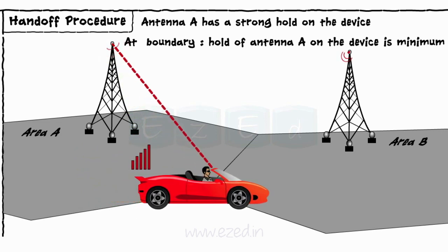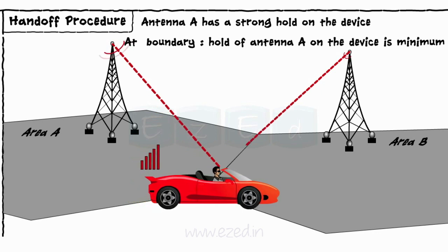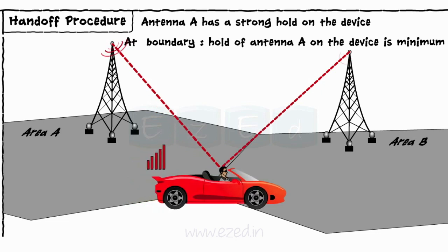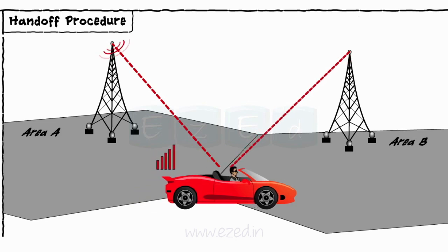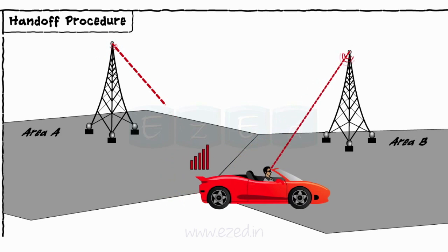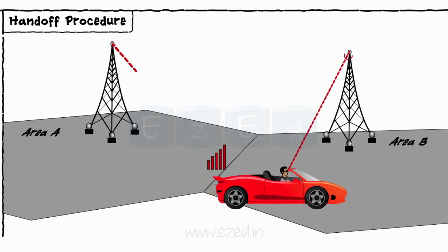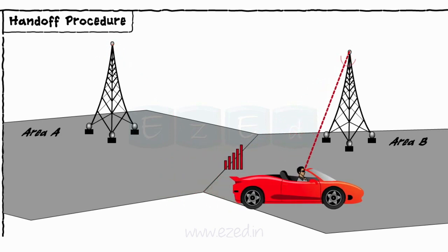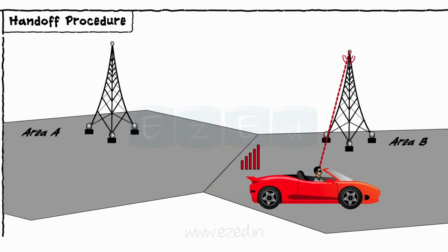At the same time, when the device is about to enter into cell B, base station B starts to take hold on the device. Thus, at the border of cell A and cell B, both antennas have an equal amount of hold on the device of user X. As user X crosses the border and enters into area B, the strength of base station A very rapidly decreases and the strength of base station B rapidly increases.